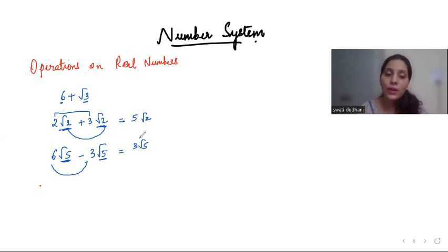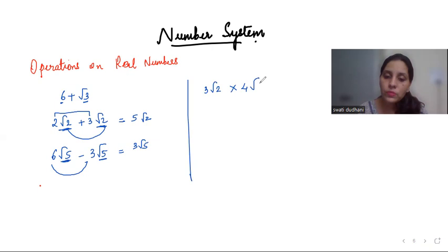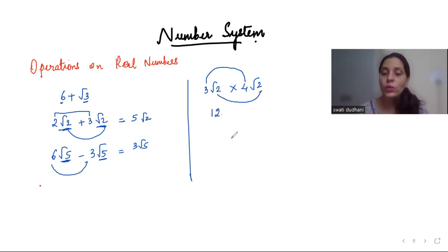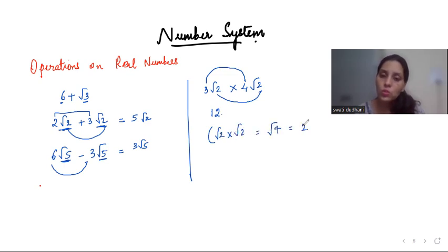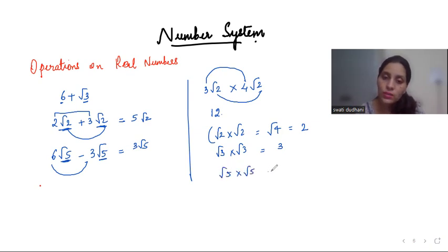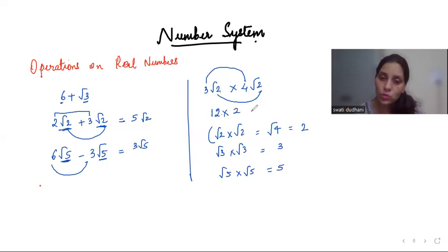For multiplication, let's say we have 3 root 2 into 4 root 2. You multiply the whole numbers together: 4 into 3 is 12. Then root 2 into root 2 is root 4, which equals 2. When multiplying two identical roots, the result is always the number without the root — root 5 into root 5 is 5, root 6 into root 6 is 6, root 2 into root 2 is 2.